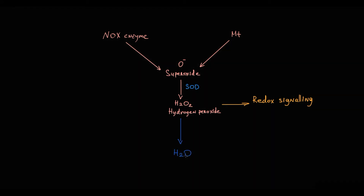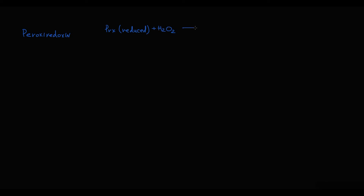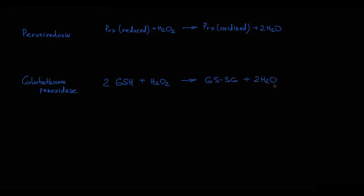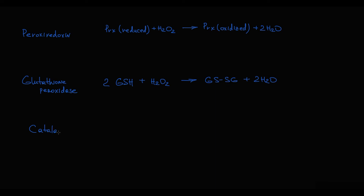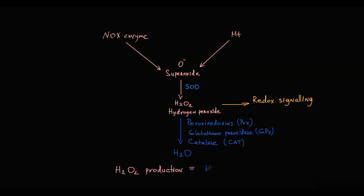Hydrogen peroxide molecules are eventually converted into water molecules by three enzymes: peroxiredoxins, glutathione peroxidase, and catalase. Peroxiredoxin in reduced form reduces hydrogen peroxide and becomes oxidized, forming two water molecules. Glutathione peroxidase catalyzes a reaction where two monomeric glutathione molecules reduce hydrogen peroxide to form glutathione disulfide and two water molecules. Catalase converts two hydrogen peroxide molecules into two water molecules and oxygen. The level of hydrogen peroxide must be maintained within strict frames, so hydrogen peroxide production must be proportional to its reduction.